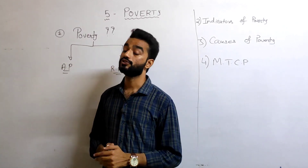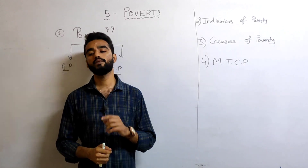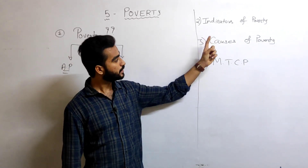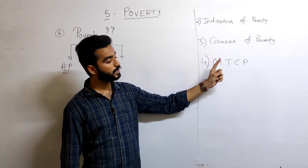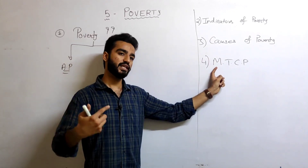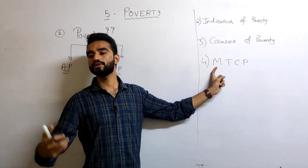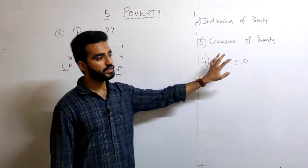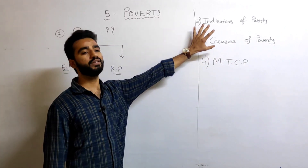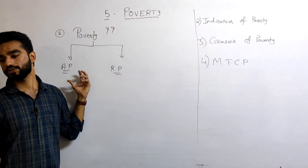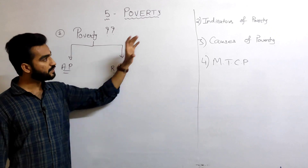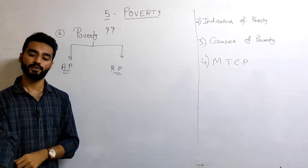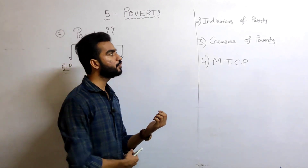So this is all about the introduction to poverty. What important things you need to know: what is poverty line, what is poor, what is poverty, what is absolutely poor, what is relatively poor. Now the next topic of our lecture — we will discuss what are the indicators of poverty, causes of poverty, and which measures we will take.